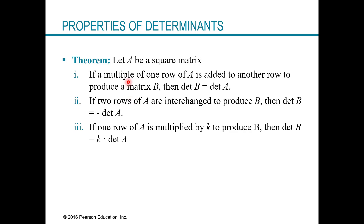Here's our first theorem. If we have a square matrix, the following three things are true. If a multiple of one row of our matrix is added to another row, producing a new matrix B, then even though we did this row operation, the determinants are still equal. The new matrix has the same determinant as the original.